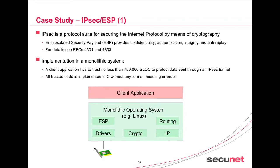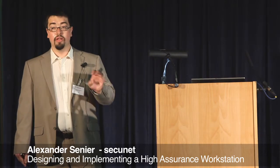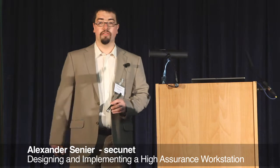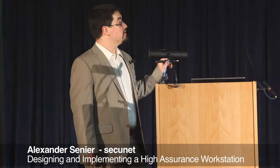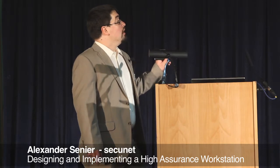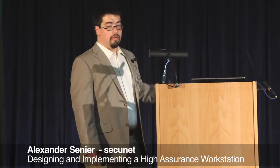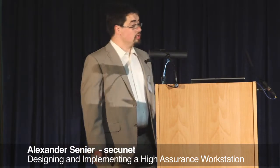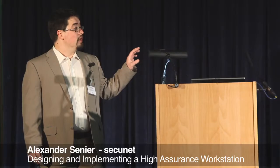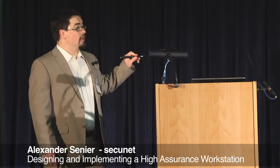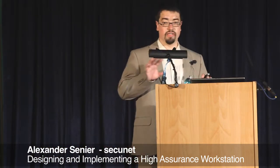So how can we transform this into a component-based MILS architecture that does the same thing but is much more secure than what we can expect from Windows, Linux, or any monolithic system? In our workstation, we took a separation kernel and built a MILS system on top of it. We have two instances of virtualized Linux: one is the network Linux, and another is the red Linux — handling classified information — on top of which runs a client application, as in the picture shown before. In principle, we have the same scenario as before.